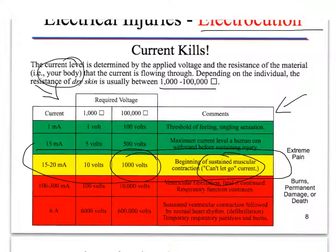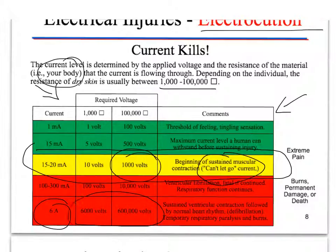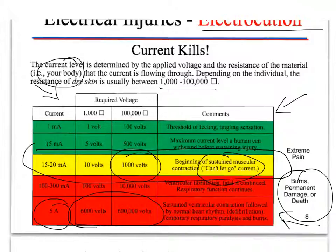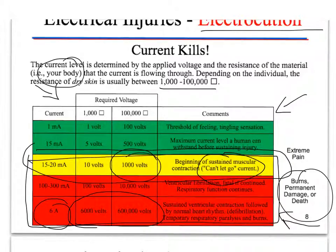This section is highlighted in yellow because it's the threshold where things become extremely dangerous. At 100 to 300 milliamps and 100 to 10,000 volts, ventricular fibrillation — which affects your heart — respiratory problems, permanent damage, burns, and even death can start to occur. Finally, at 6 amps and 6,000 to 600,000 volts, you'll have defibrillation of your heart, you may stop breathing, and you can get severe burns — all of this can possibly cause death. Fortunately, we're going to be working with 9-volt batteries, so we should be okay.